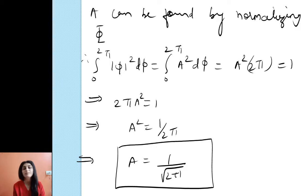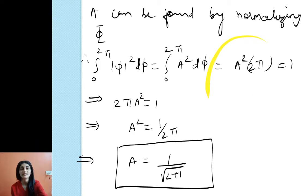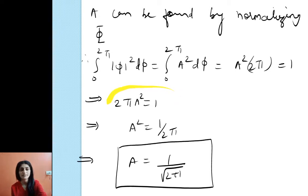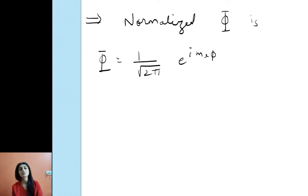The constant A can be found by normalizing phi. Integrating |Φ|² dφ from 0 to 2π gives A² · 2π = 1, so A² = 1/(2π), and A = 1/√(2π). Therefore the normalized phi equation is Φ = (1/√(2π)) · e^(i·m_l·φ).